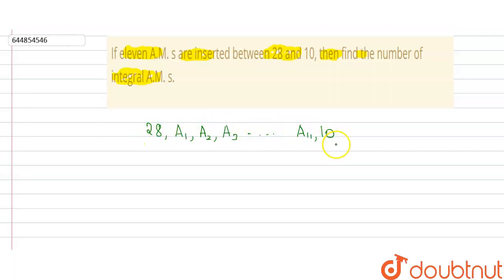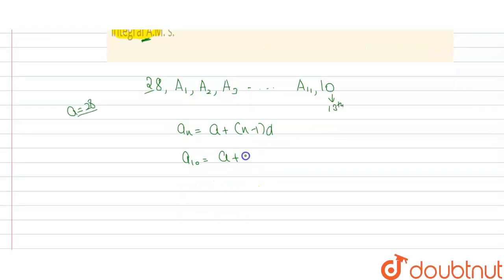As these are 11 terms and this is 12th term, this will be 13th term. The nth term is given by a + (n-1)d. We are given that the 13th term is 10, so we'll get a₁₃ = a + (13-1)d = 10, which gives us a + 12d = 10.